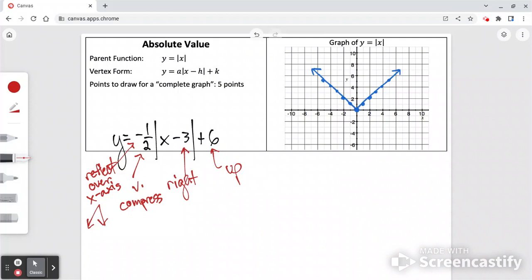So we can either count for the vertex and count over right 1, 2, 3, and then up 1, 2, 3, 4, 5, 6, and that's where our vertex will be. Or we can say the vertex is the opposite of the number inside the bracket, so positive 3, and the same as the number outside the bracket, positive 6.